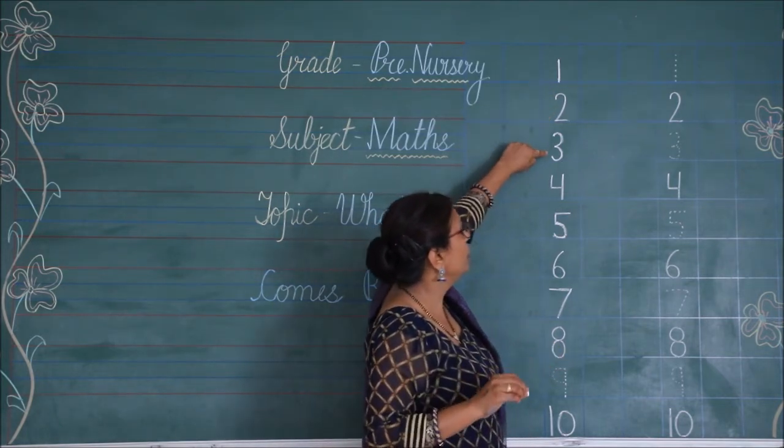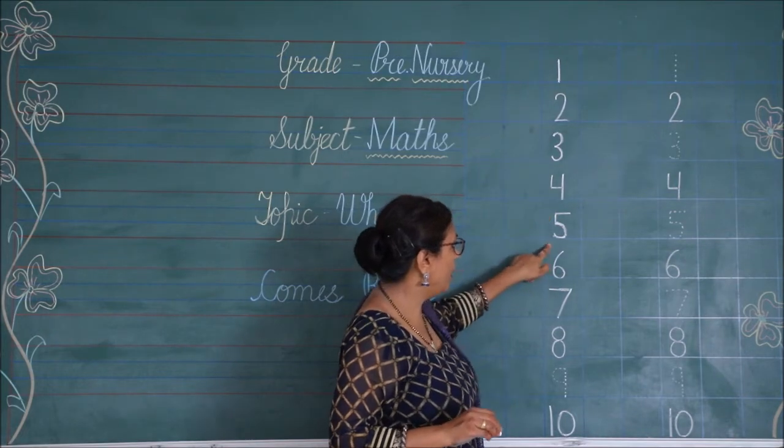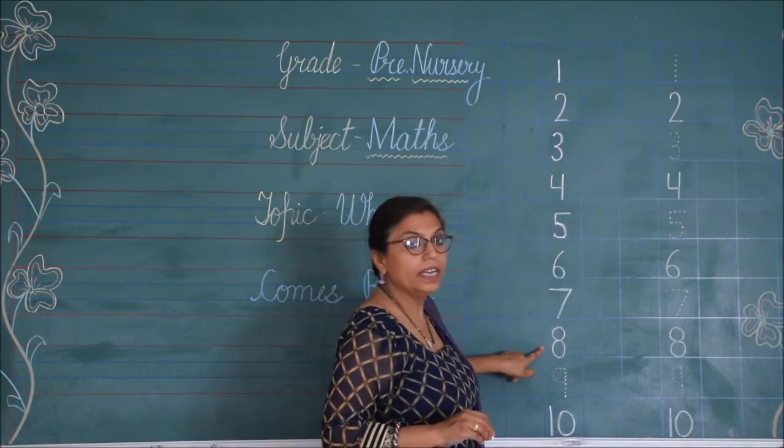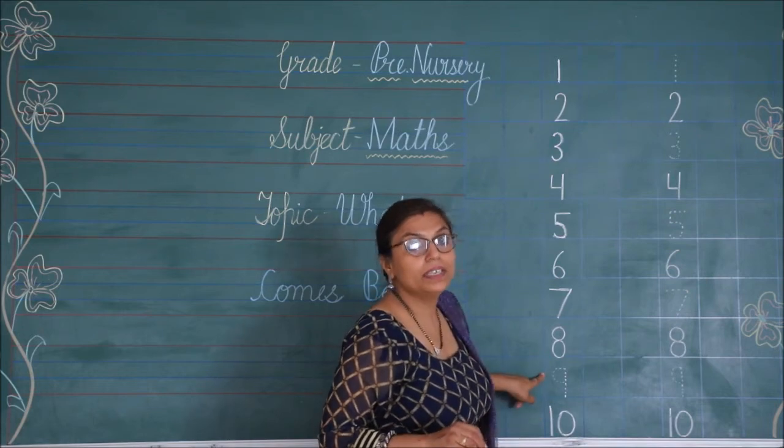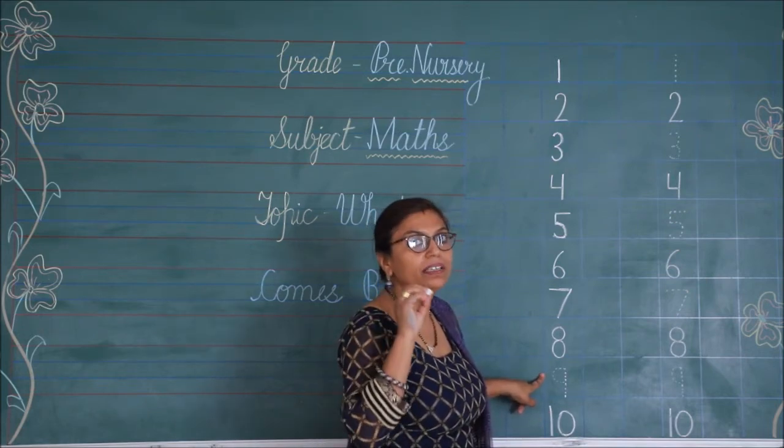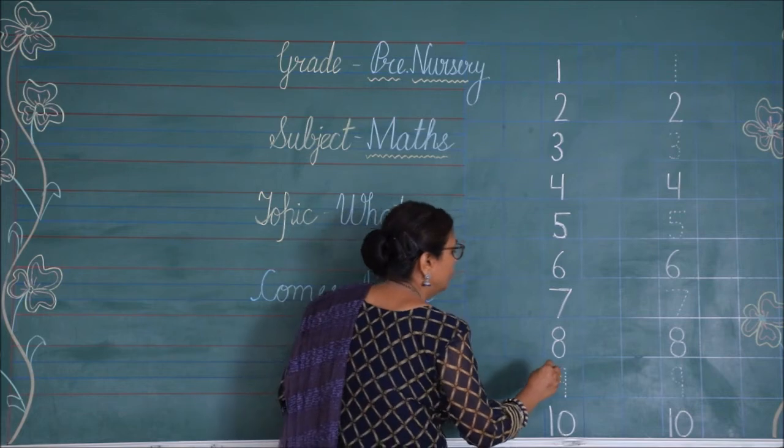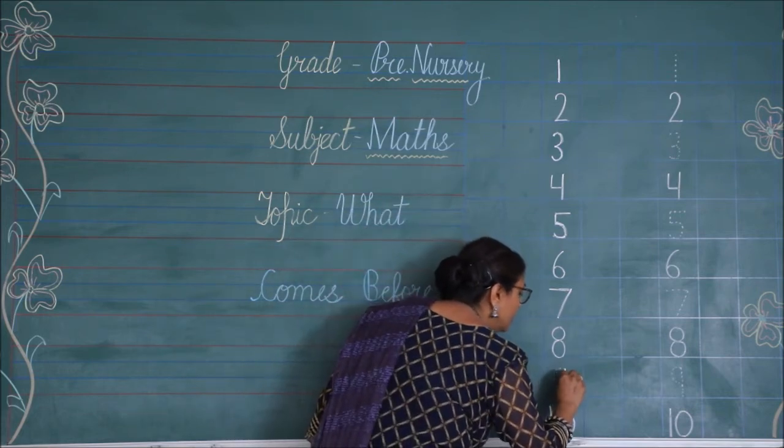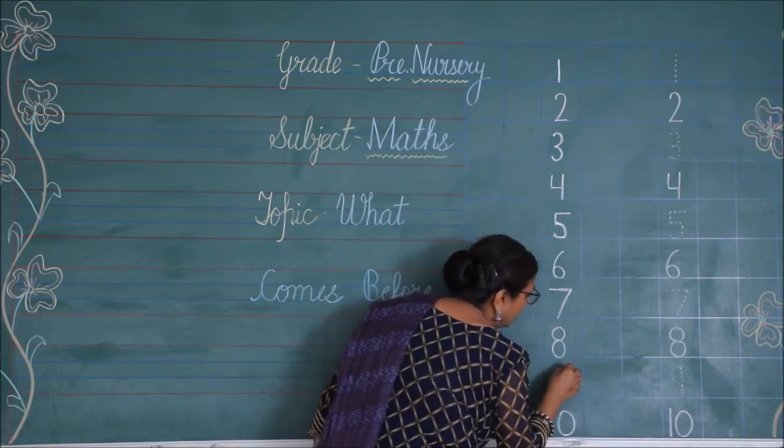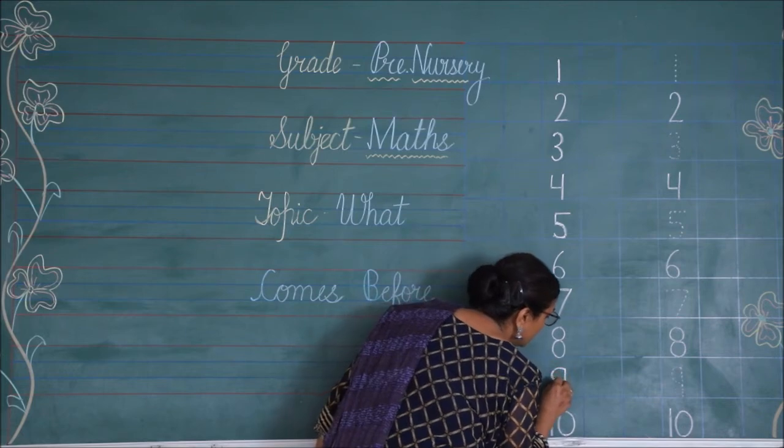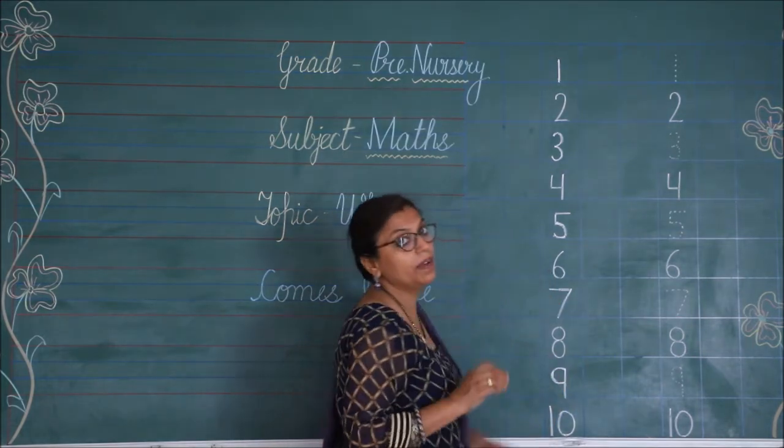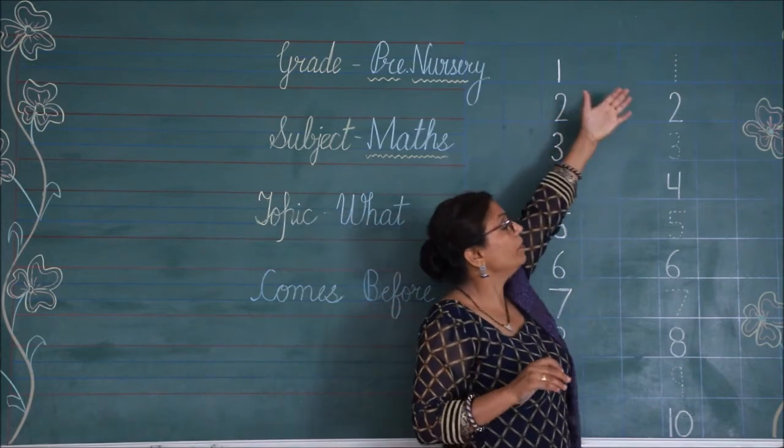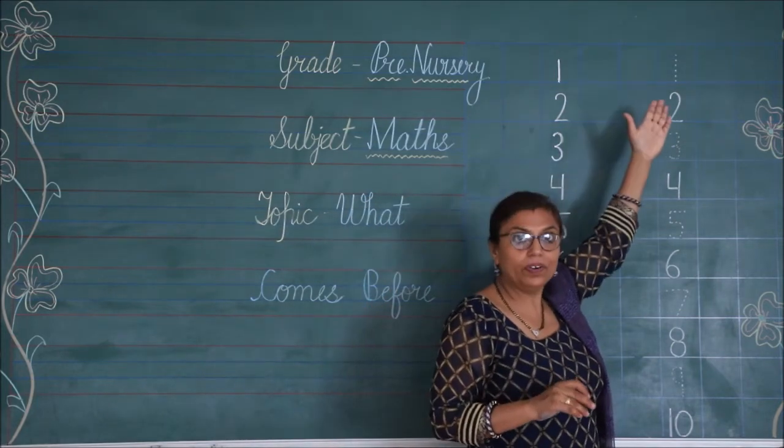1, 2, 3, 4, 5, 6, 7, 8. Then 10. And before 10, which number will come? It will be number 9. So, you have to join the dots for number 9. And our 1 to 10 counting is completed now. So, this is the concept of before. Jo aapka upar wala number hota hai, wo before number hota hai.